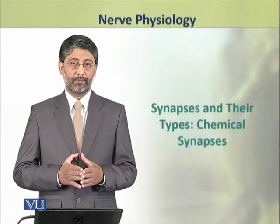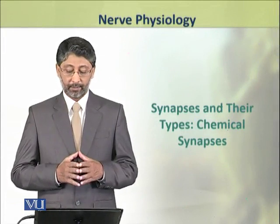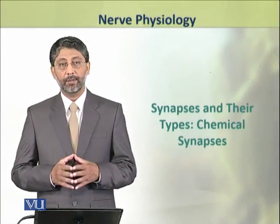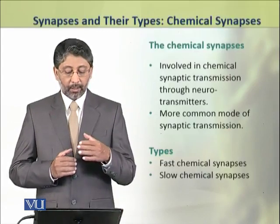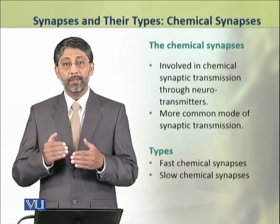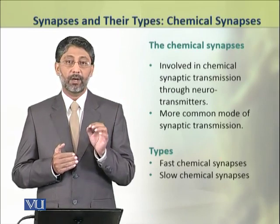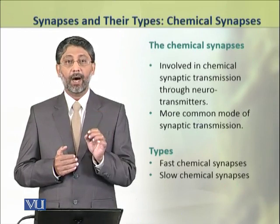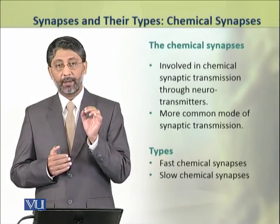In this module we shall discuss in detail the second type of synapses, which are the chemical synapses. Chemical synapses are involved in chemical synaptic transmission through the use of neurotransmitters. They are the most common form of synaptic transmission.